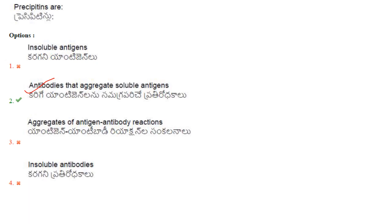Precipitins are antibodies that form a precipitate when they come in contact with the antigen. The correct option is: antibodies that aggregate soluble antigens. The answer is option 2.